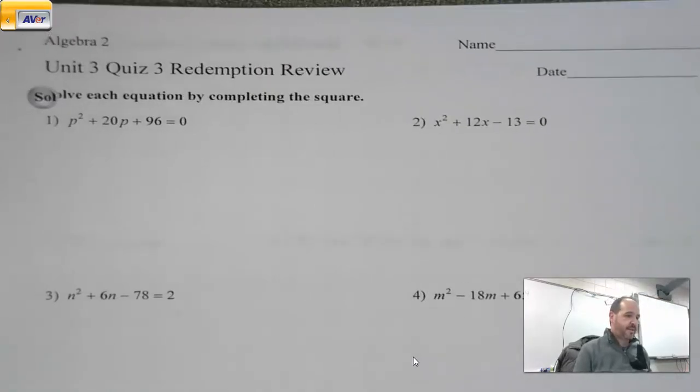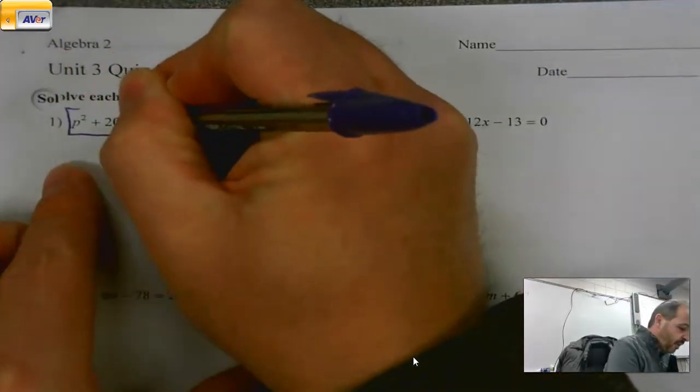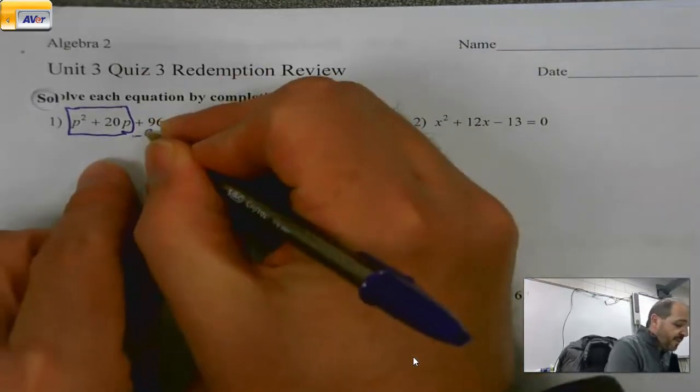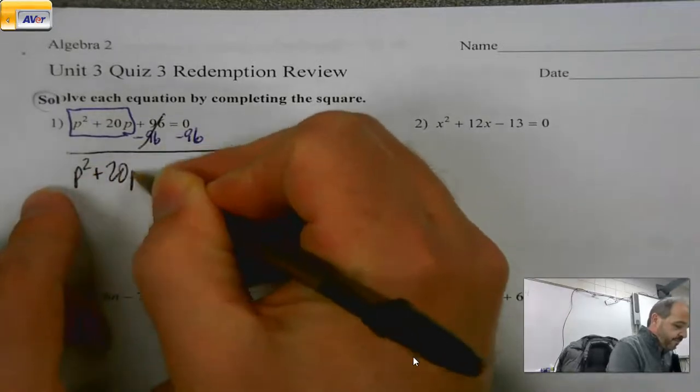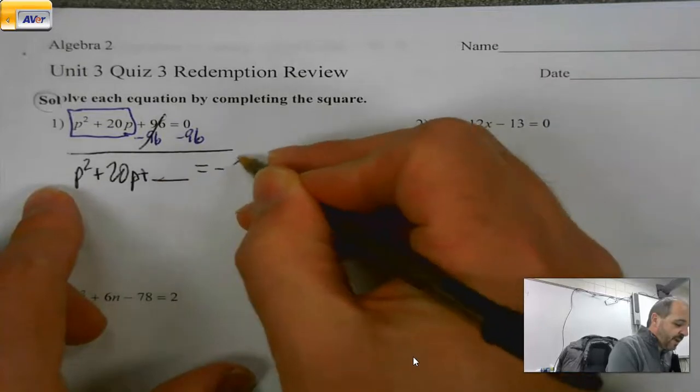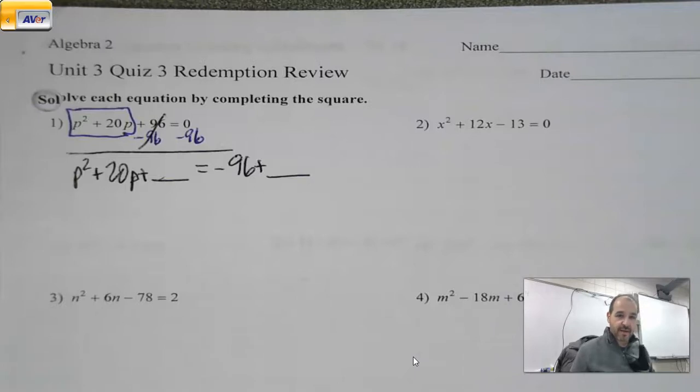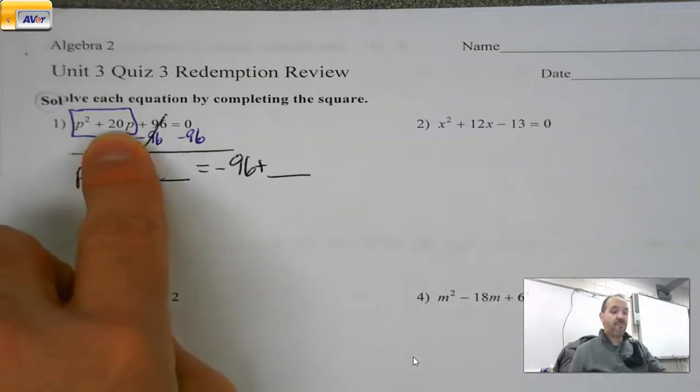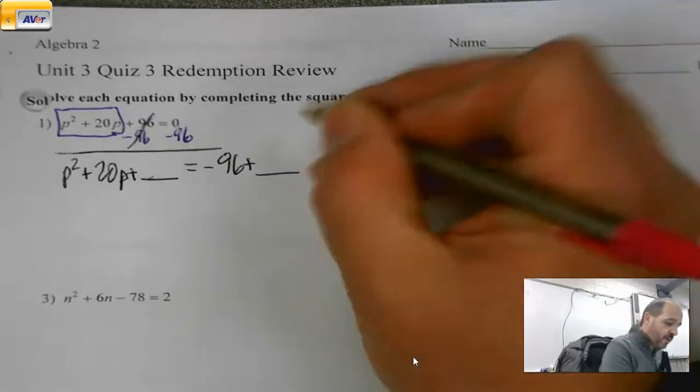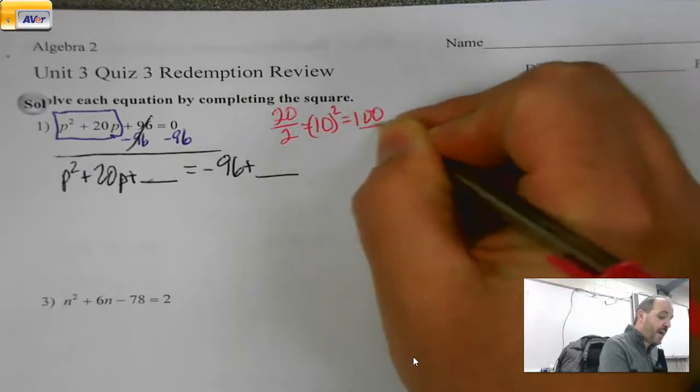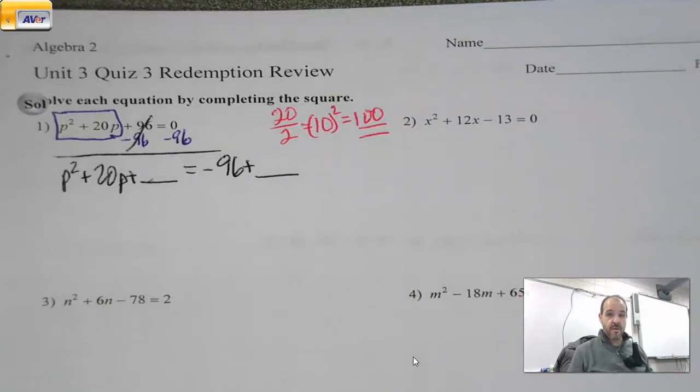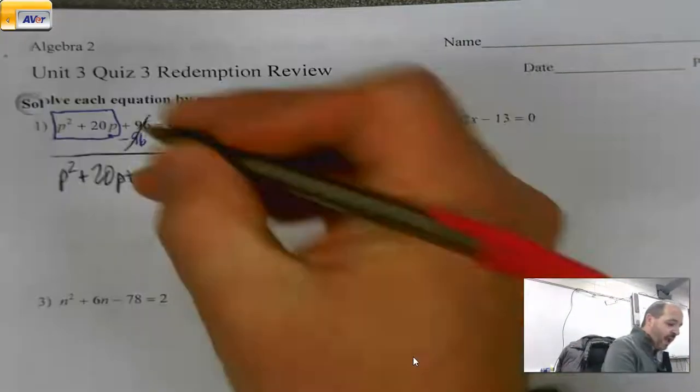So solve each equation by completing the square. Let's start with number one. First job whenever we're doing completing the square is to get our variable terms alone on a side by themselves. So we've got to do to get any other terms out of there, we need to do. So 96, see you later. When we get those P's by themselves on each side of our equation, we're going to put a blank.